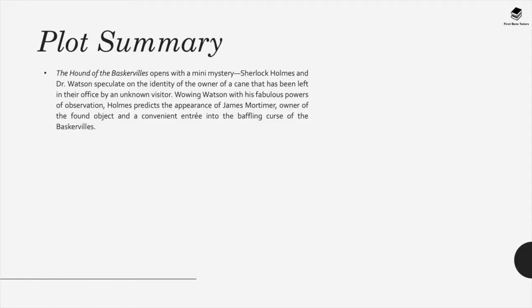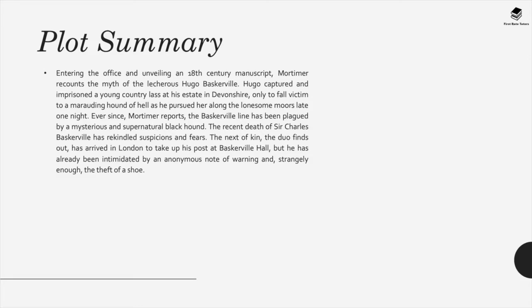The Hound of the Baskervilles opens with a mini mystery. Sherlock Holmes and Dr. Watson speculate on the identity of the owner of a cane that has been left in their office by an unknown visitor. Holmes predicts the appearance of James Mortimer, owner of the found object — a convenient entrée into the baffling curse of the Baskervilles. Entering the office and unveiling an 18th century manuscript, Mortimer recounts the myth of the licentious Hugo Baskerville. Hugo captured and imprisoned a young country lass at his estate in Devonshire, only to fall victim to a marauding hound of hell as he pursued her along the lonesome moors late one night. Ever since, Mortimer reports, the Baskerville line has been plagued by a mysterious and supernatural black hound.